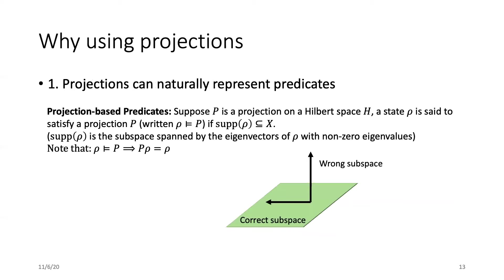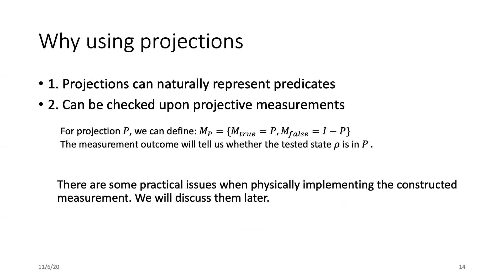Projections can naturally represent predicates. A state is said to satisfy a projection P when it is inside the subspace P. The idea of using projections as predicates first appears back in 1936, even before computer science appears. The satisfaction of a projection-based predicate can be checked using projective measurements. Many physical implementations of quantum computers directly and only support projective measurements. For example,